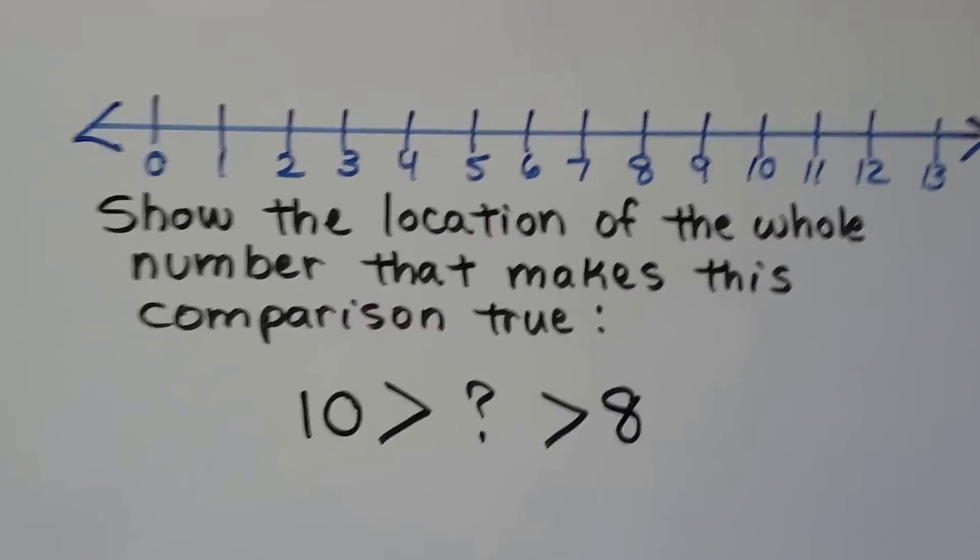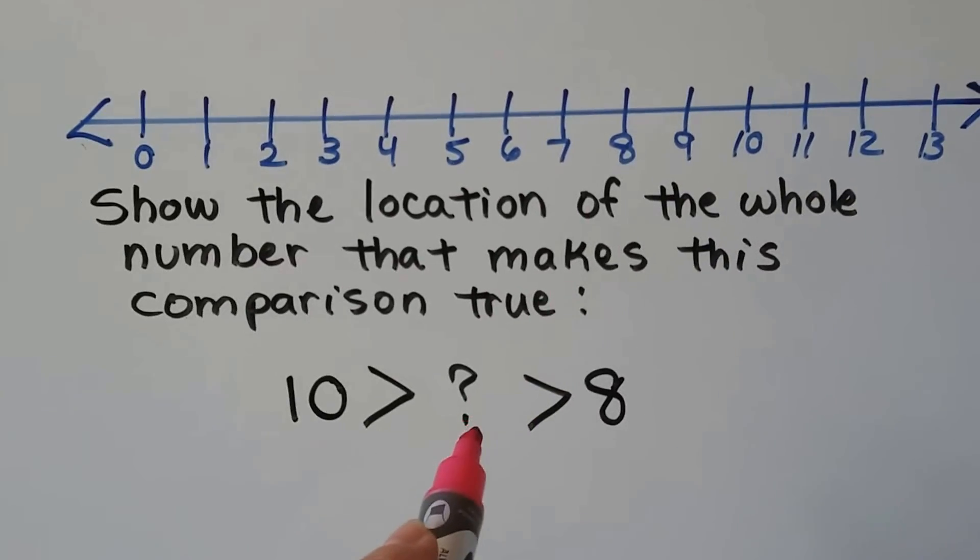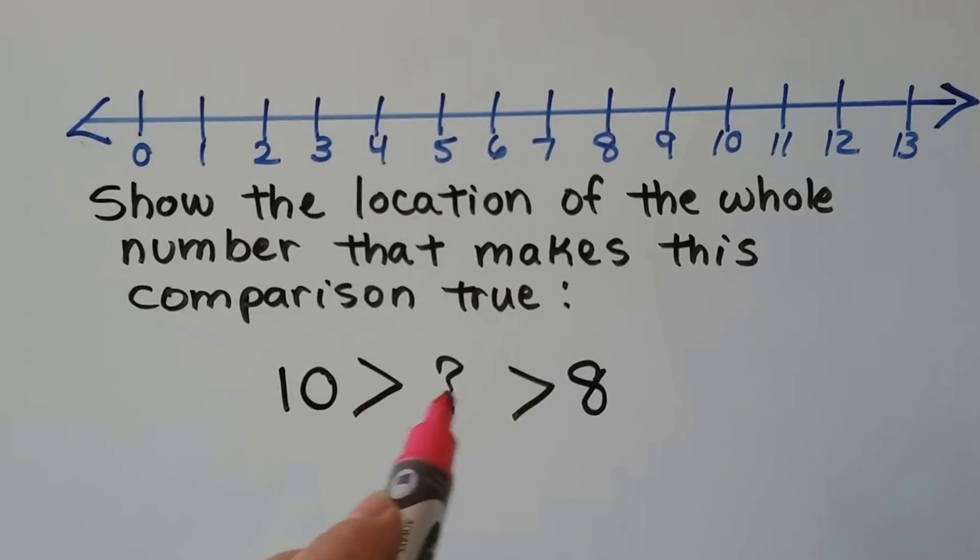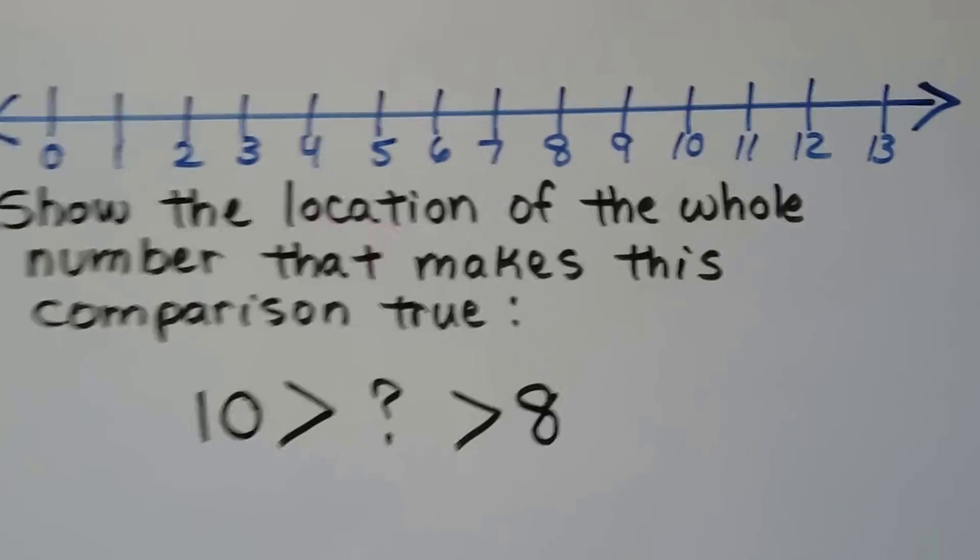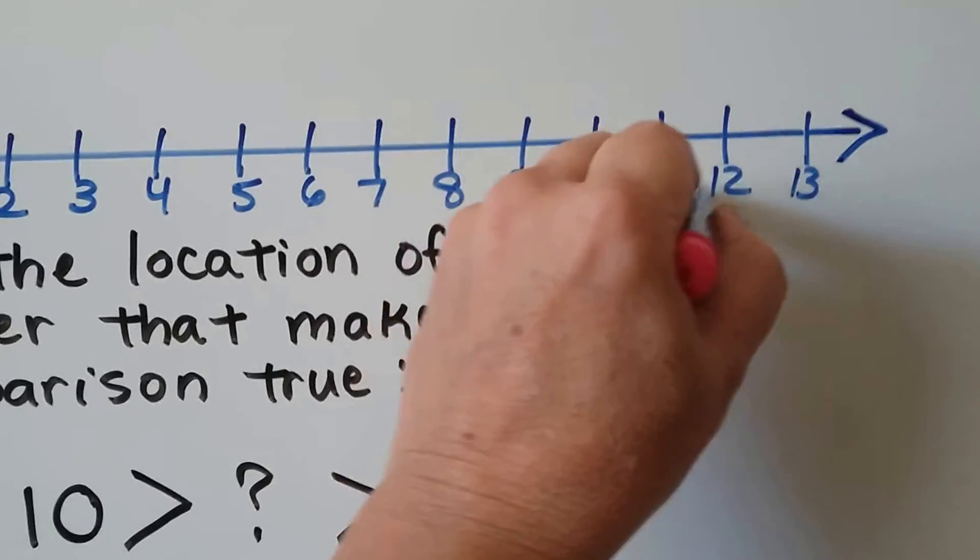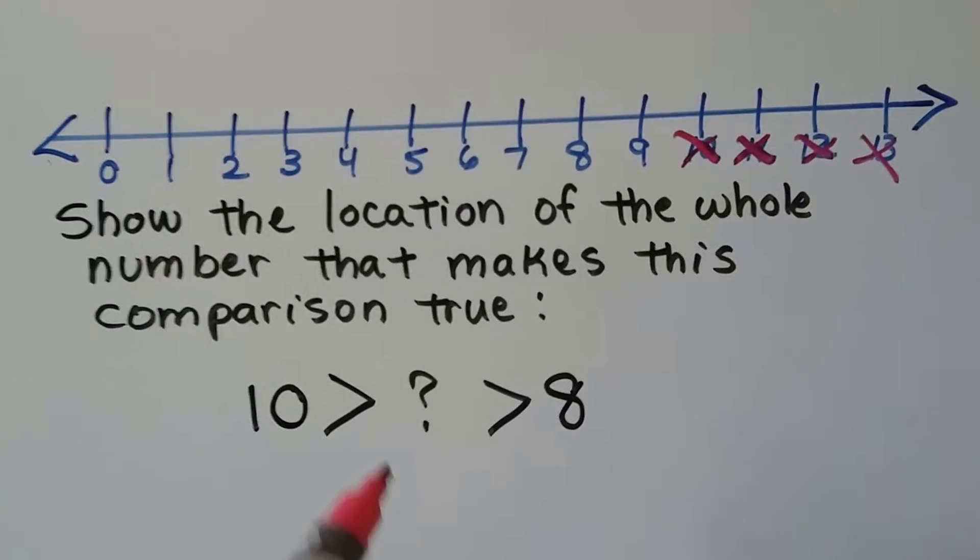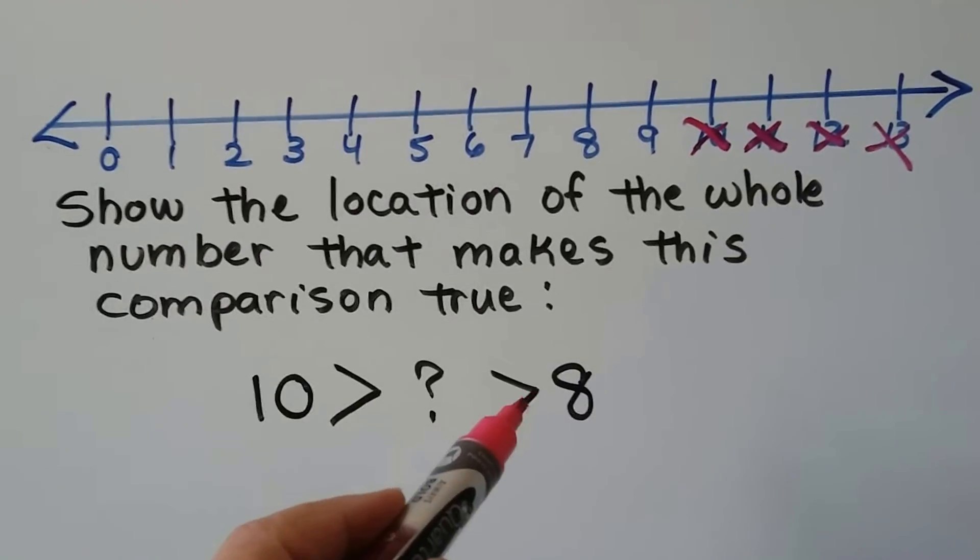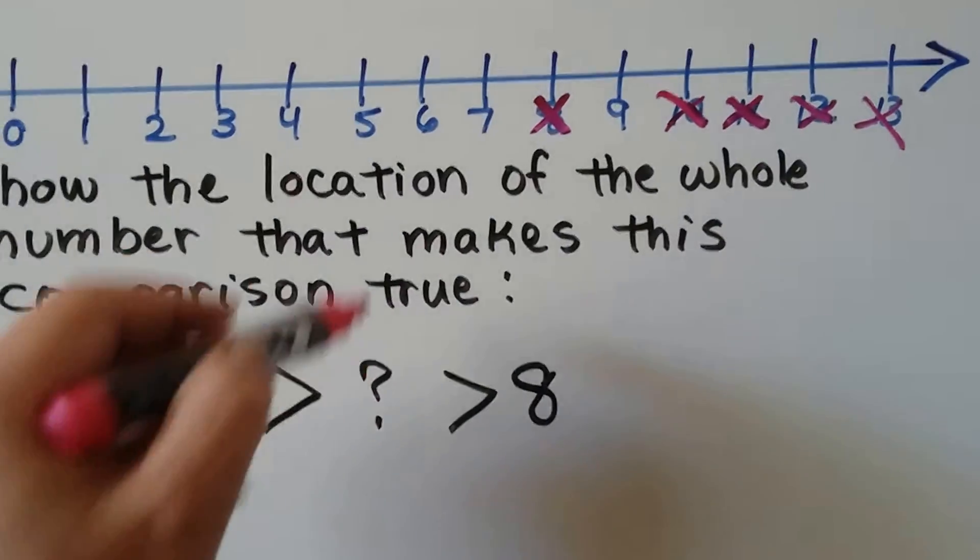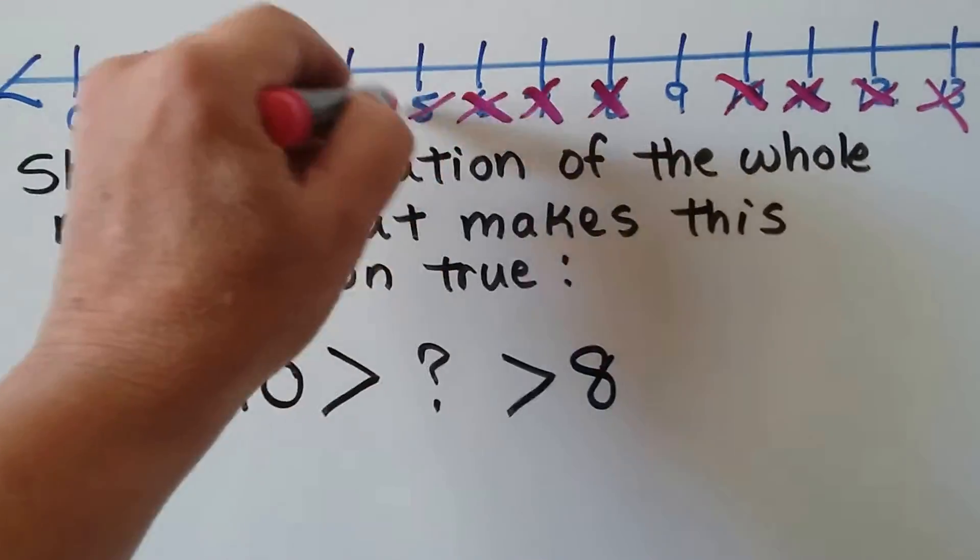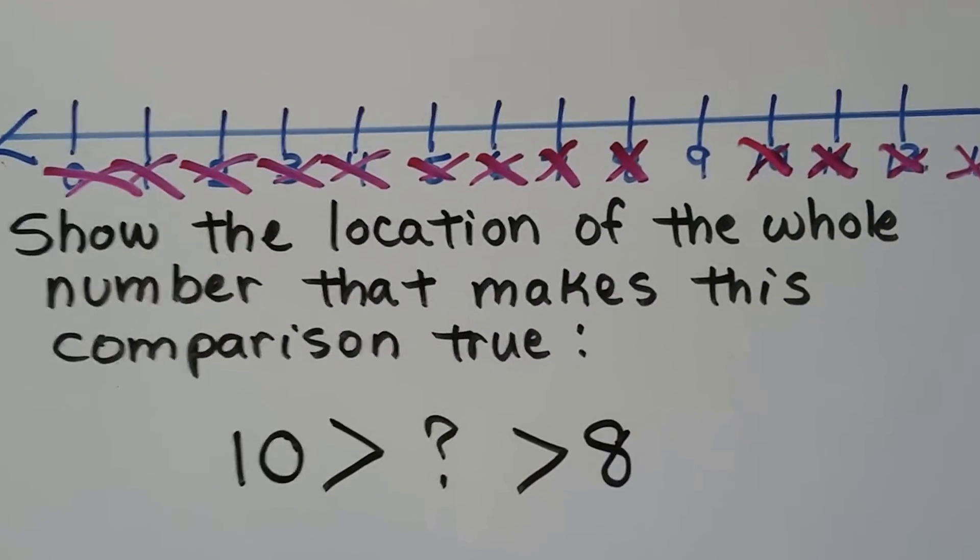Let's try another one. Here's another inequality. It says, show the location of the whole number that makes this comparison true. Some number is less than 10 but greater than 8. Well, if it's less than 10, it can't be 10. It's got to be less than that. So all these numbers that are bigger than 10 don't count. It's got to be less than 10. And it says that it's greater than 8. So if it's greater than 8, it can't be 8, can it? And if it's greater than 8, it can't be all these numbers that are smaller than 8. So none of these would fit either. And look what's left. It's got to be 9, right?